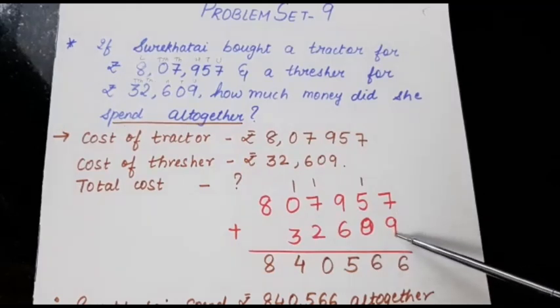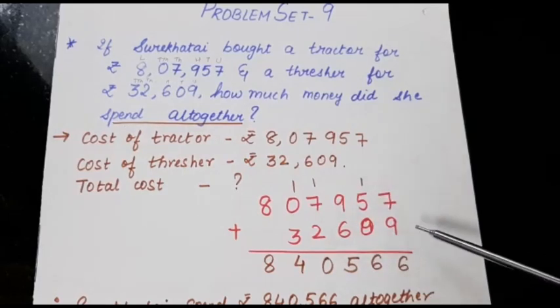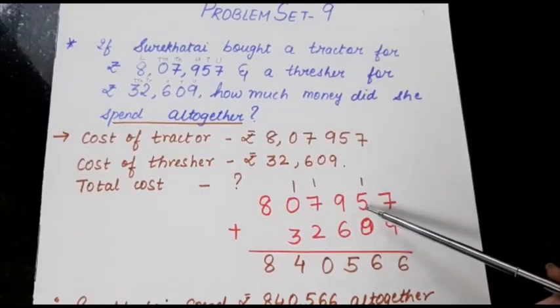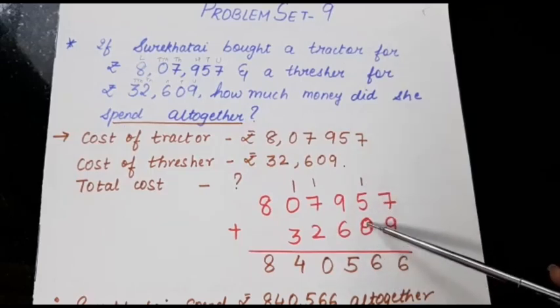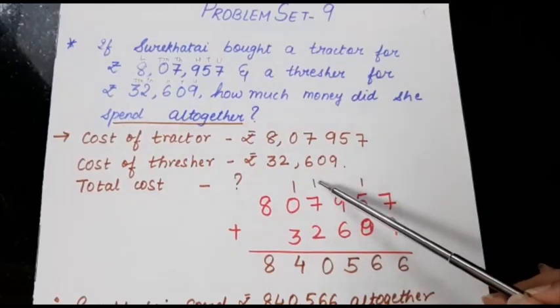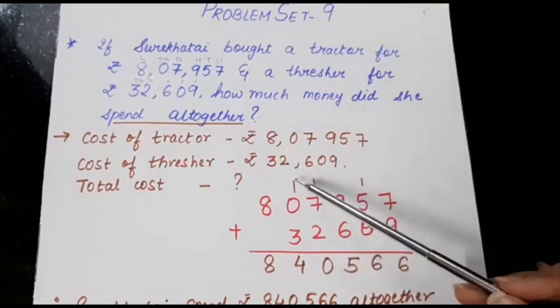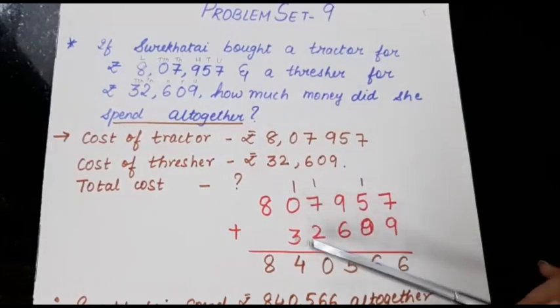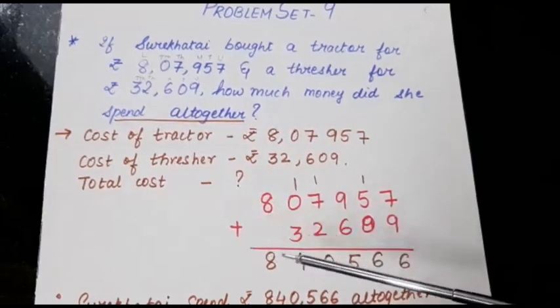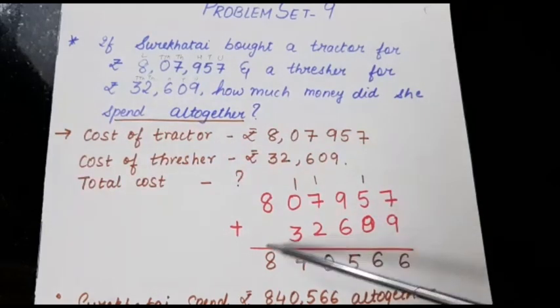Start from the end. 9 plus 7 is 16. So 6 and 1 you have carried. Now if you want you can make a table also but if you don't make a table you do it directly then also it's okay. 5 plus 1 is 6. 0 doesn't have any value. 9 plus 6 is 15. 5 we have written here. 7 plus 2 plus 1 which is 10. So 0 and 1 we have carried. 3 plus 1 is 4. 8 nothing is there here so we will write 8 only. So what is our answer that we got? 8,40,566.